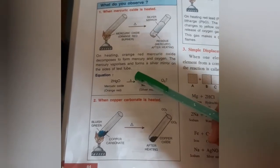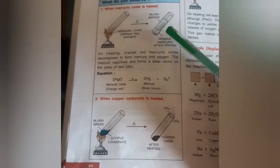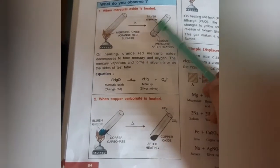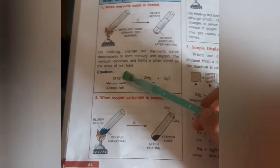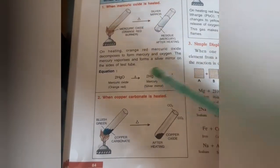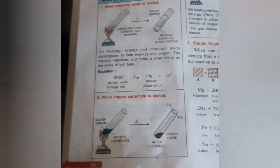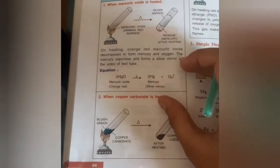The mercury vaporizes and forms a silver mirror on the sides of the test tube. You will see the silver mirror on the side of the test tube. The equation is mercury oxide to mercury plus oxygen. This is the reaction where one reactant breaks into two products.